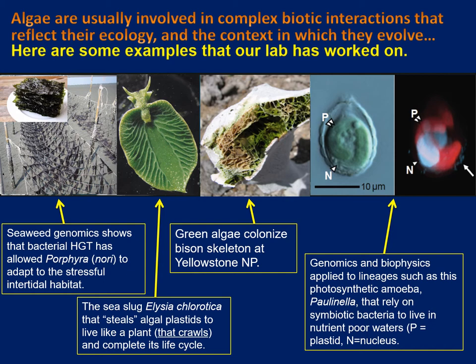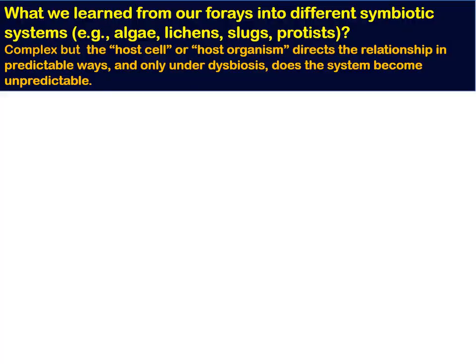We've also studied how photosynthesis has emerged in a sacoglossán slug lineage called Elysia chlorotica. We've looked at how green algae have shown up in interesting places in the world, for example, in an isolated bison skeleton in Yellowstone National Park, shown in the middle. And on the right are two images of Paulinella chromatophora, a photosynthetic amoeba that has become a model for understanding how a temporary symbiont — a cyanobacterium — ultimately becomes a photosynthetic organelle. We're trying to understand how this complex union of two different cells is created, maintained, and inherited over time.